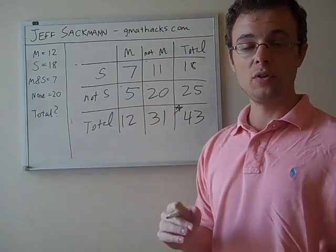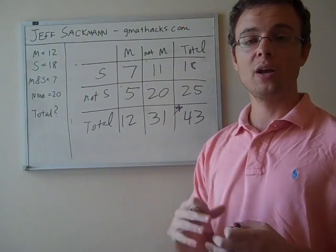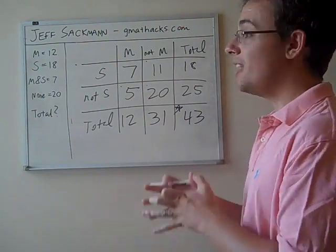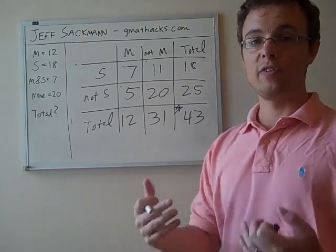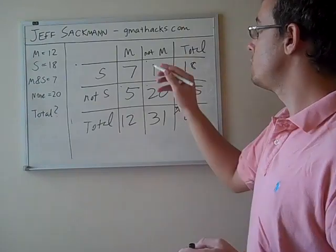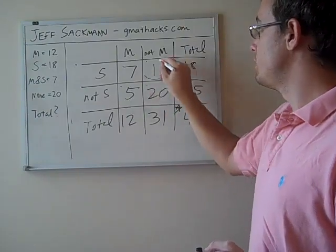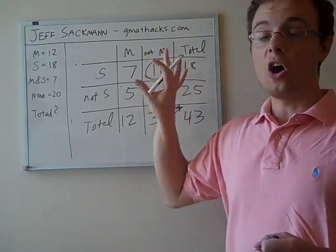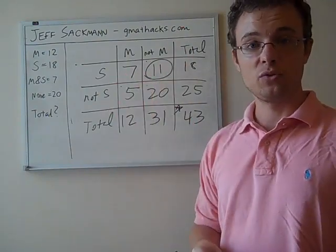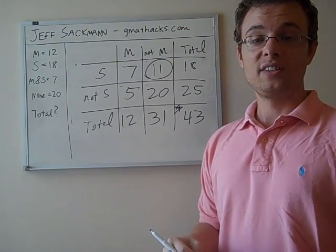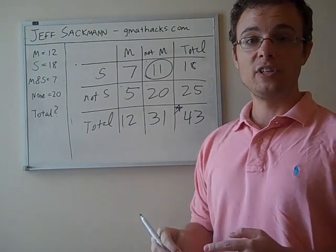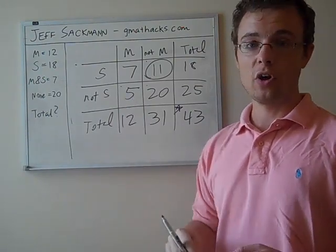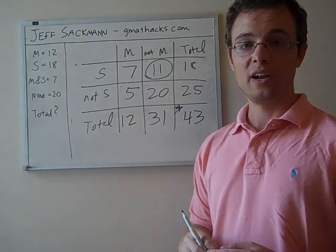So on the simpler questions, if you like the Venn diagram, use the Venn diagram. Use the equation. But as they get more complicated, maybe there are variables involved. Maybe you're searching for something like the number of science majors who aren't math majors, for instance. The table will always work, even if it takes a few extra steps. So lots of stuff for you to work with there. Definitely spend some time practicing. Check out the articles at GMATHacks.com. And I'll see you next time.